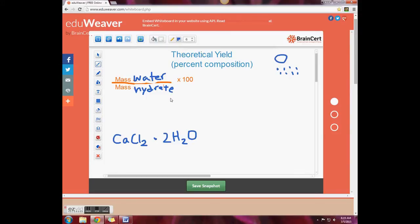So we have our hydrate calcium chloride dihydrate on the bottom. And we look at our formula and we see that we have two water molecules. So that's going to go on top.